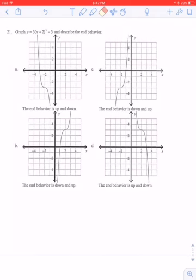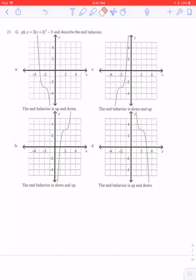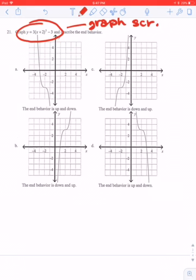First of all, when it says graph this and describe the end behavior, you're just going through and you're taking that and you're putting it in the graphing scratch pad. So when I go to graph this and I put it in, the only one that it's going to match up here is C.